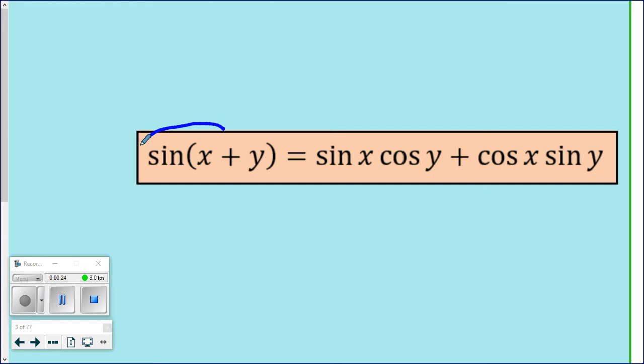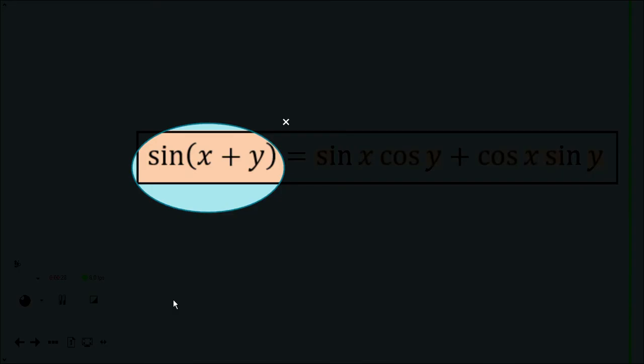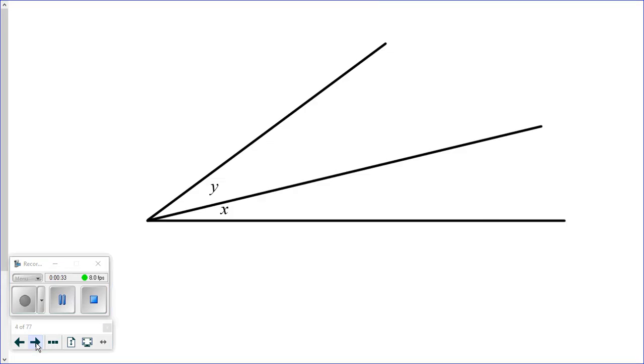So to look at this proof, we're going to start by focusing just on sine x plus y. This diagram shows us two angles, one I've labeled x and one I've labeled y. I've drawn them beside each other because of course we want to talk about angle x plus y. But since this identity talks about sine of x plus y, we'd really like to see some sort of triangle so we can start to look at something like opposite over hypotenuse.